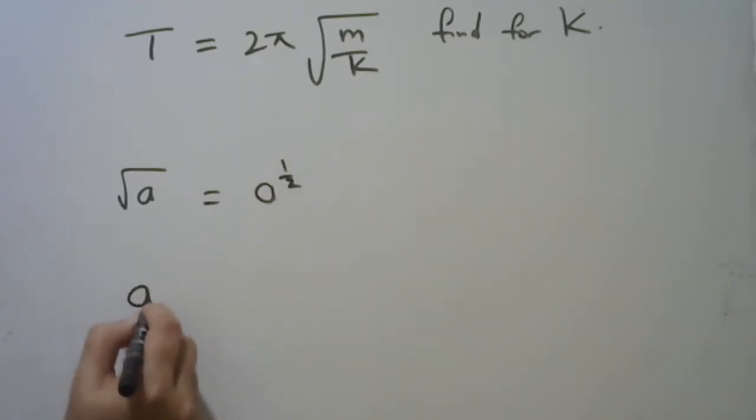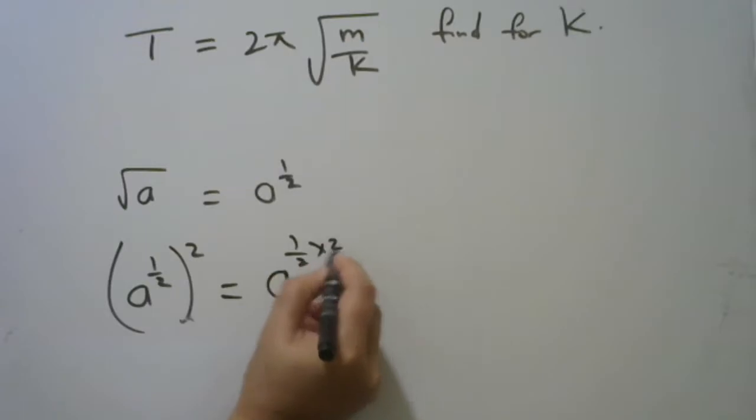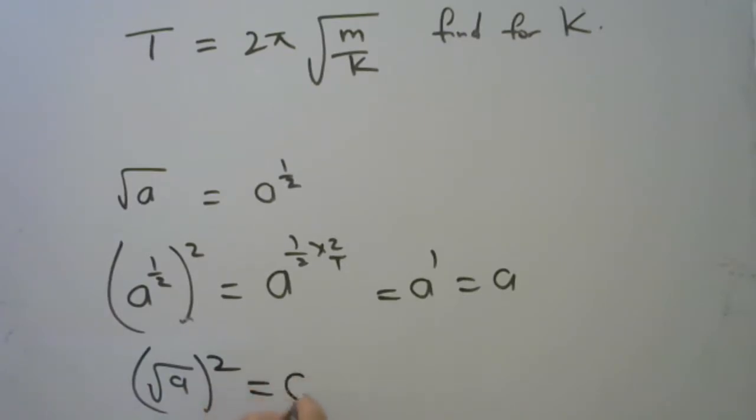Now, a to the half squared is the same as a to the half times 2 upon 1, equals a to the 1 equals a. So what I'm saying here is that the square root of a squared is equal to a.